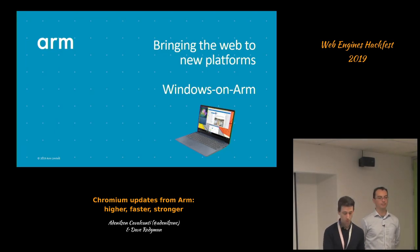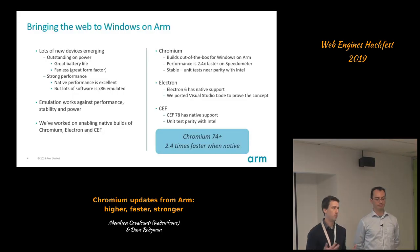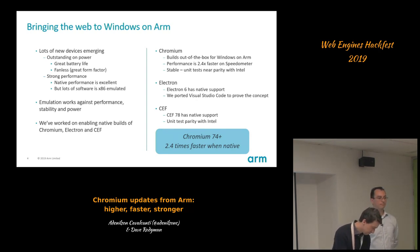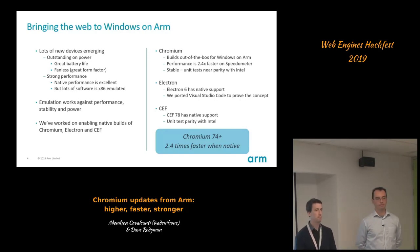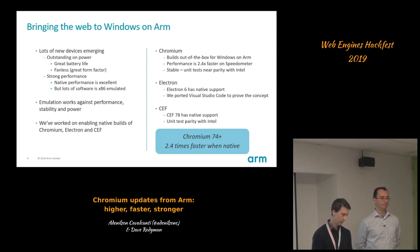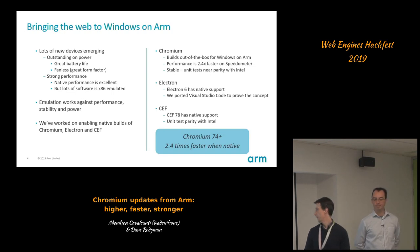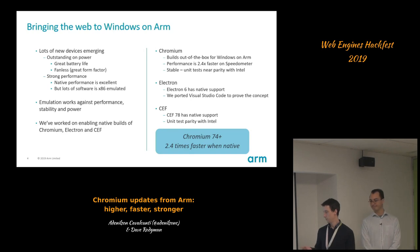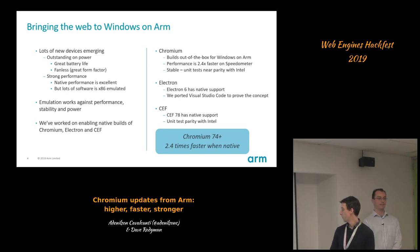We'll start off with a quick update on Windows and ARM. There's a bunch of new Windows on ARM devices coming onto the market, and the performance is great — unless you have your browser emulated. One of the things we've done is quite a bit of porting work on Chromium to get it building natively out of the box, and that gives you about a 2.4 times speedup on Speedometer. Based on Chromium, we've also looked at the Electron and CEF application frameworks, so people building apps on Chromium web technologies can get native builds that perform well on Windows and ARM.